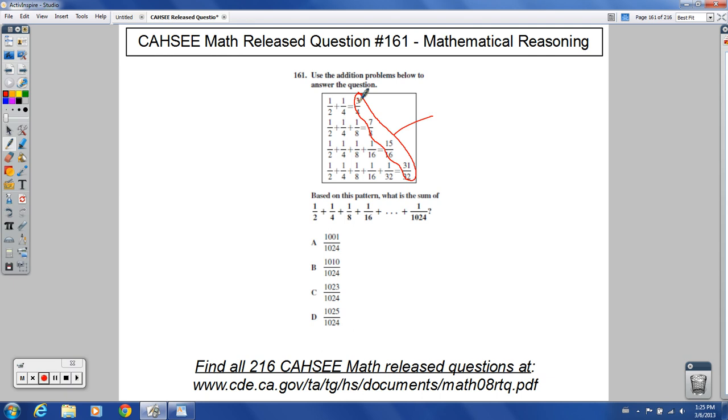The numerator, the number on the top, is always 1 less than the number on the bottom. So let's write that down. The numerator is always 1 less than the denominator.